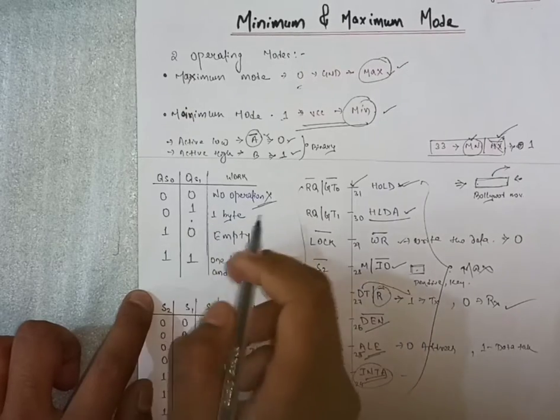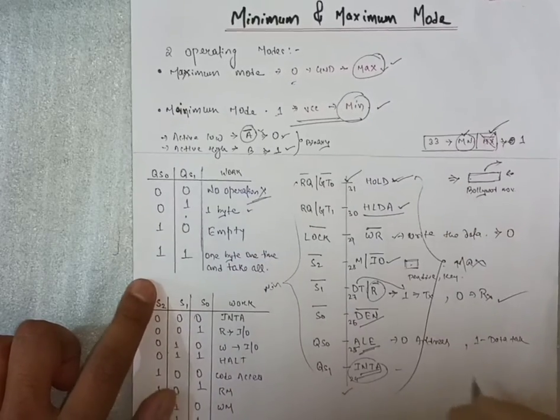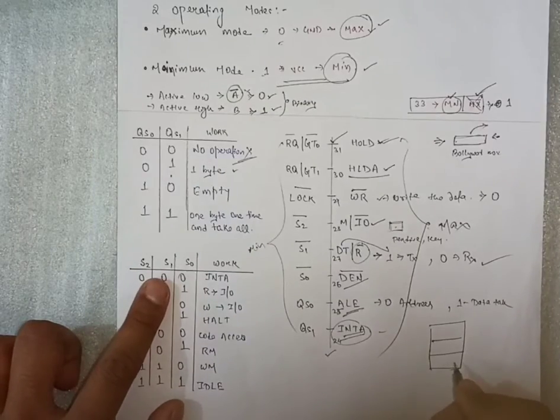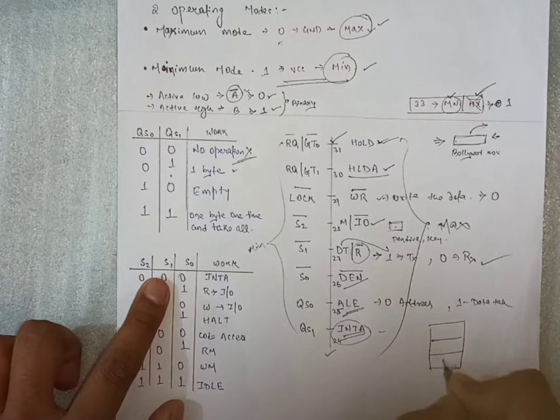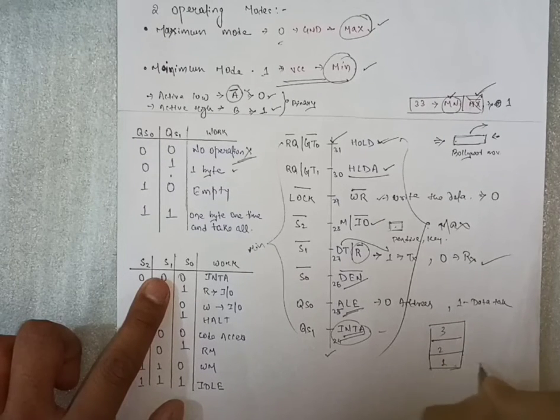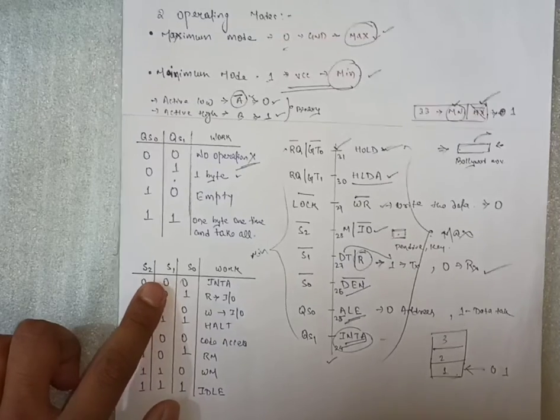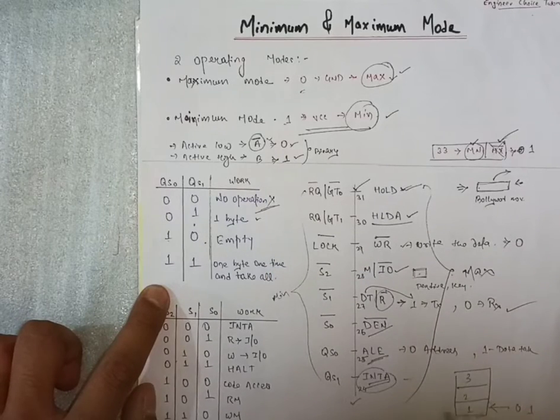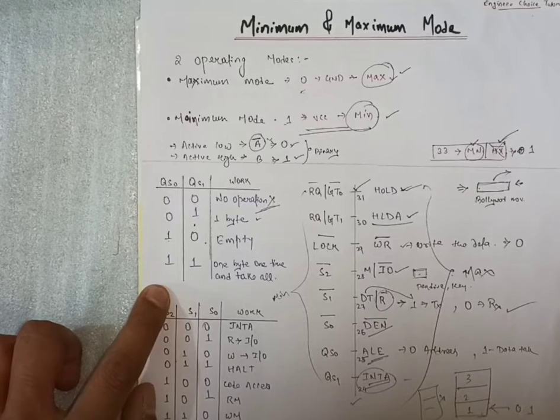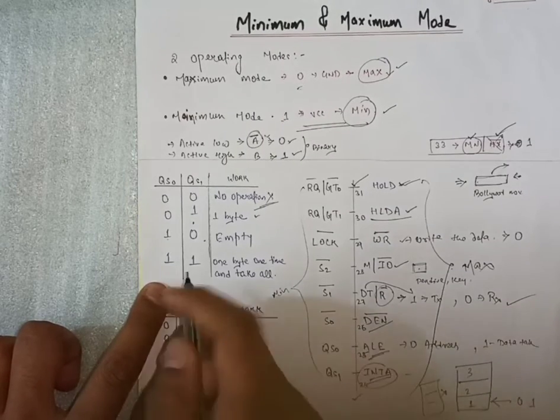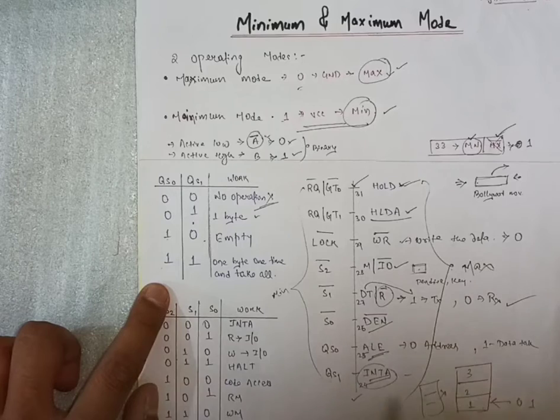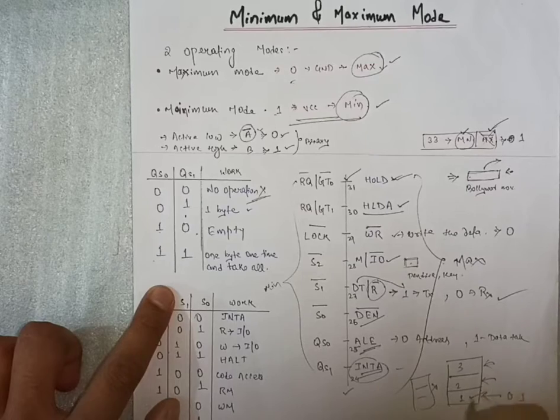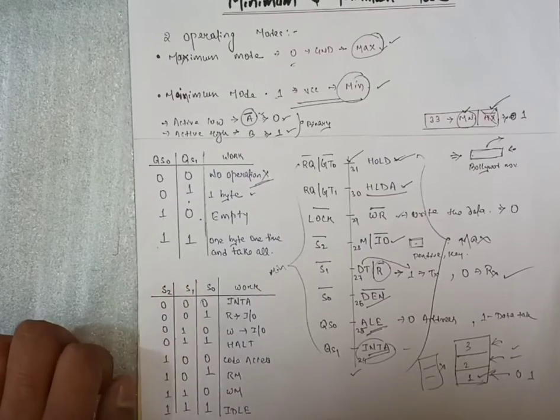If value is zero one, QS0 is one and QS1 is zero, then it will take one byte. Suppose we have a byte, we have three segments. It will take one byte from here, first, second, third. It will take only one when value is zero one. When value is one zero, means whole stack is empty. No data is present. If the value of both is one and one, then one subsequent data it will take, one by one. First it will take first data, after that this data will come, after that third data will come. It is performed one by one.